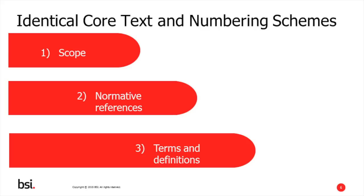The high-level structure now has 10 clauses in total, and we're going to go through the detail of these clauses. You can see on screen the first three clauses of the standard. It's really important that you read the standard from the very beginning. Please don't be tempted to skip to the detailed clauses, because these first three clauses include some important information. Clause 1 covers the intent — the purpose of this is to succinctly define the subject and the purpose of the management system, and also indicates the limits of the applicability of the standard.